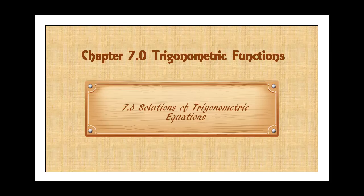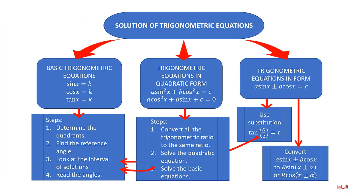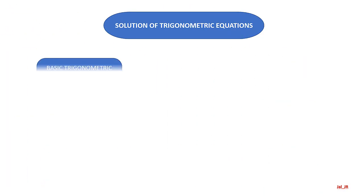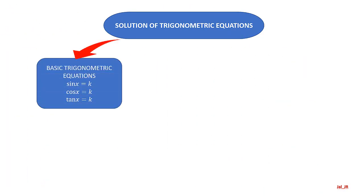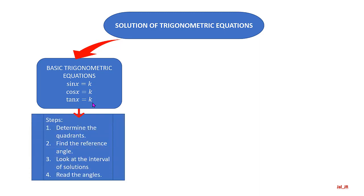In this subtopic, you are going to learn how to solve trigonometric equations. We are going to concentrate on three types of equations. The first type is basic trigonometric equations: sine of x equal to k, cosine of x equal to k, and tangent of x equal to k.